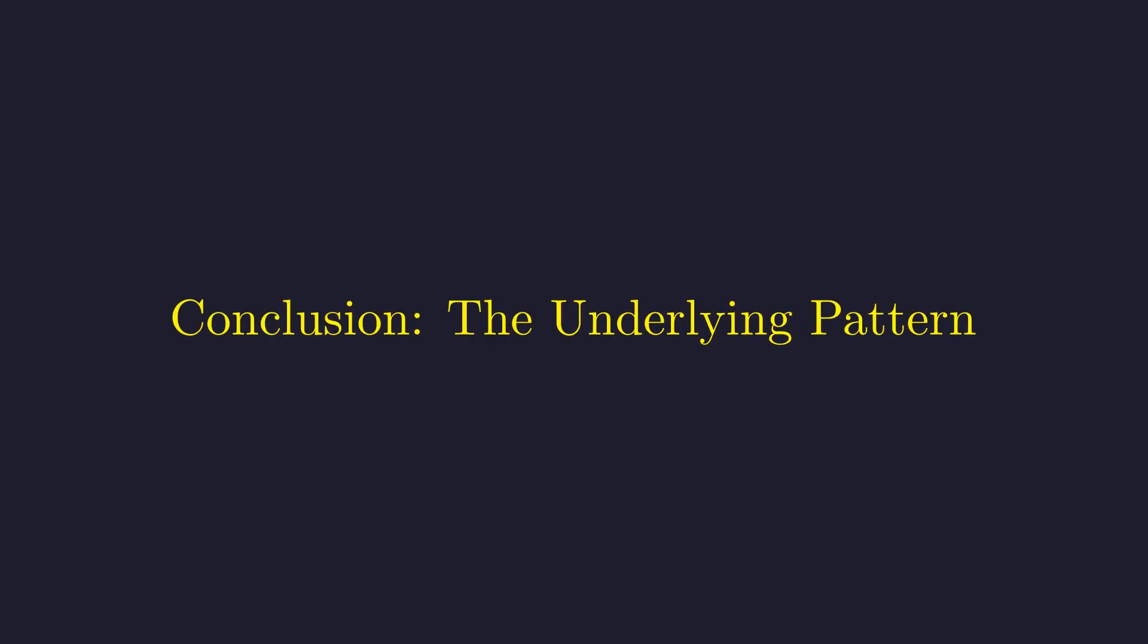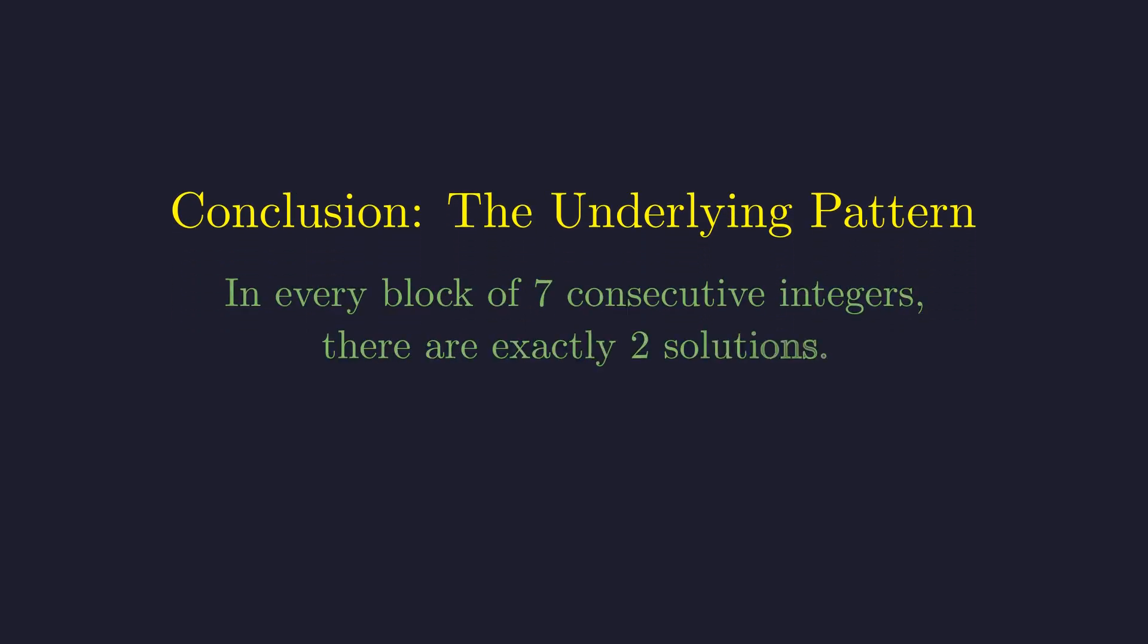But this number is not just an answer. It reveals the deeper pattern we were looking for. Our analysis proved that in any set of seven consecutive integers, there are precisely two solutions: the one with a remainder of 5 and the one with a remainder of 6.